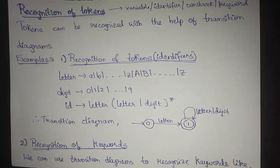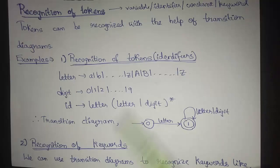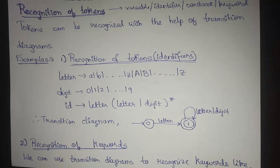As we know, the lexical analyzer reads a source program character by character and produces a sequence of tokens as a result for further processing. The tokens might be in the form of variables, identifiers, constants, or keywords. These tokens are specified with the help of regular expressions, as discussed in the previous video, and can be depicted using state transition diagrams — that is what is known as recognition of specified tokens.